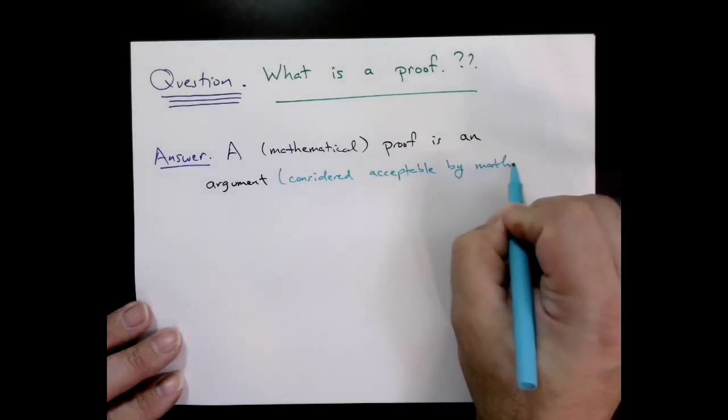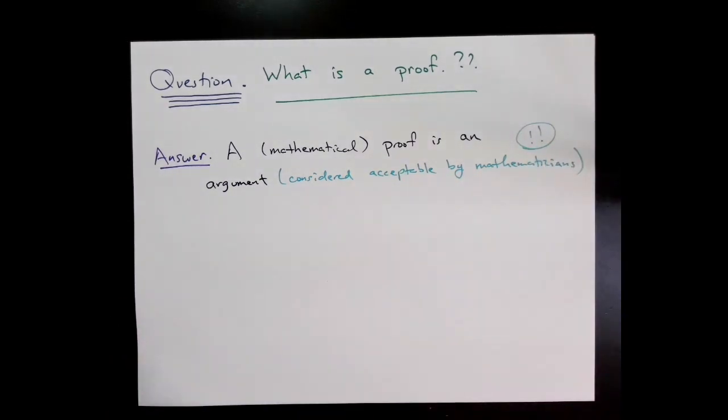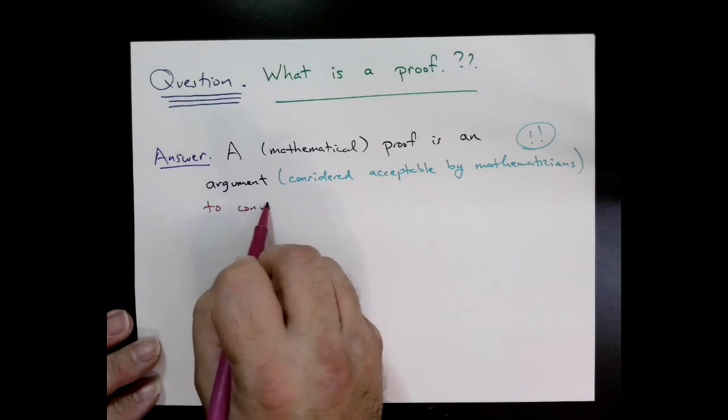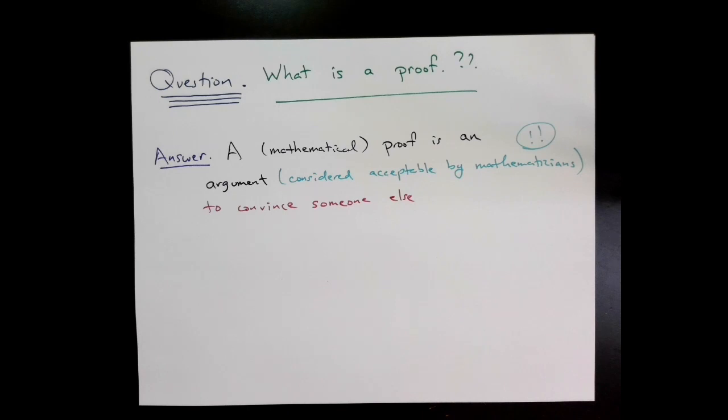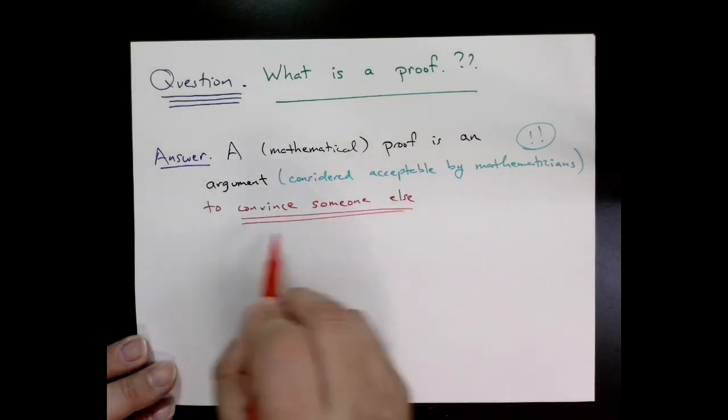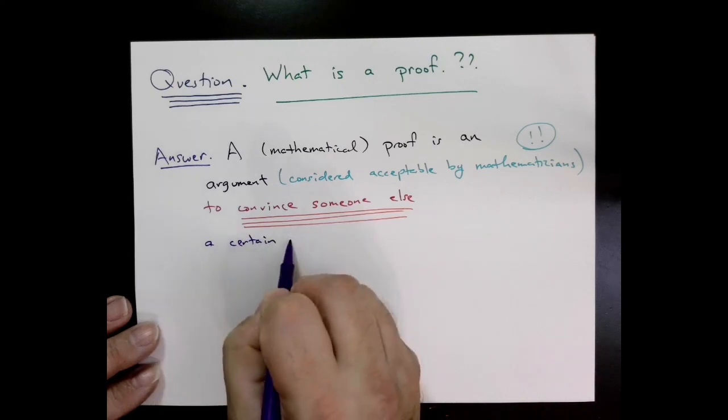I want to point out some crucial things in this definition. We only consider arguments that are considered acceptable by mathematicians. That's not really a well-defined thing; there's a cultural aspect to it, a professional aspect to it. Part of this course is training you in the culture and what's considered standard operating procedure in mathematics.